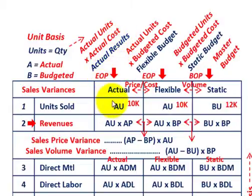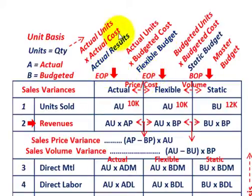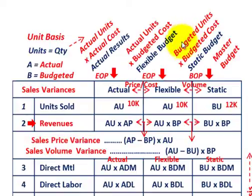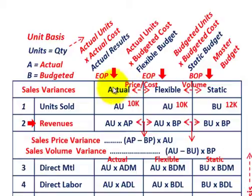The flexible budget is determined at the end of the period because it's based on our actual units or quantities times the budgeted cost. The budgeted cost comes from our static budget developed at the beginning of the period, while the actual units come from our actual results for the period.